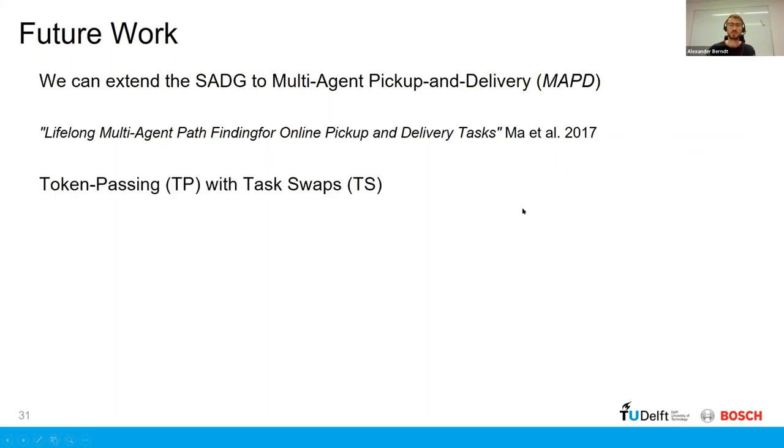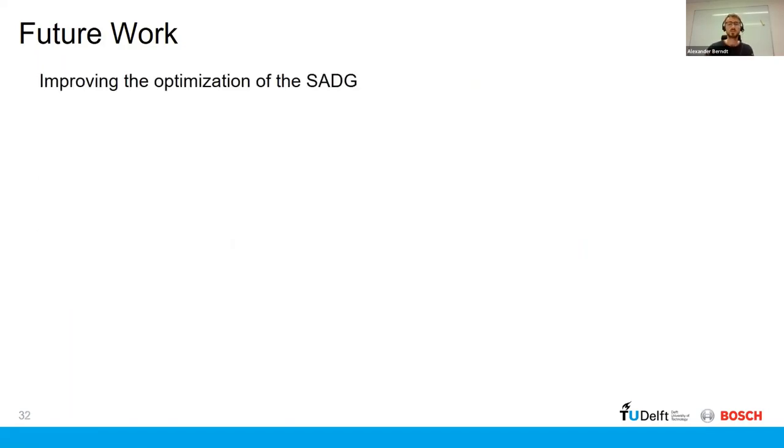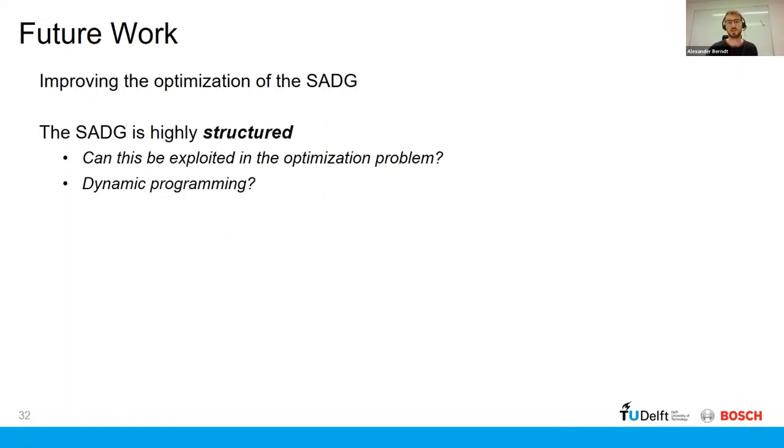Initially the idea of the solution by Ma et al. is that they have this token passing with task swaps idea where the token is essentially a shared block of memory that all the AGVs can access. And the idea would be how can we maybe use a shared SADG for each AGV and then we could update it persistently as the AGVs select new tasks.